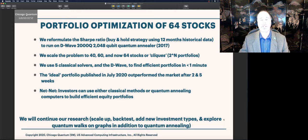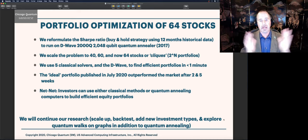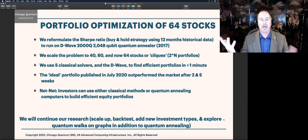We continue our research. We're going to add backtesting, different asset classes. We're looking at maybe extending or decreasing the amount of time where the portfolio makes sense. And we're starting to do our research on quantum walks on graphs.